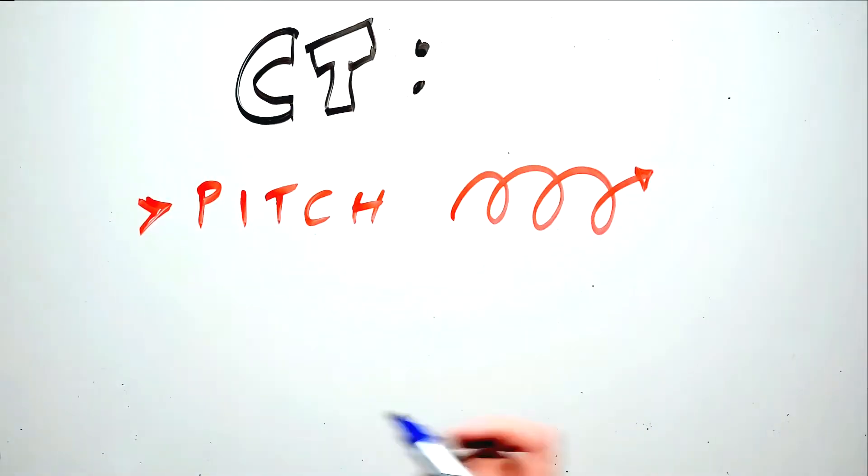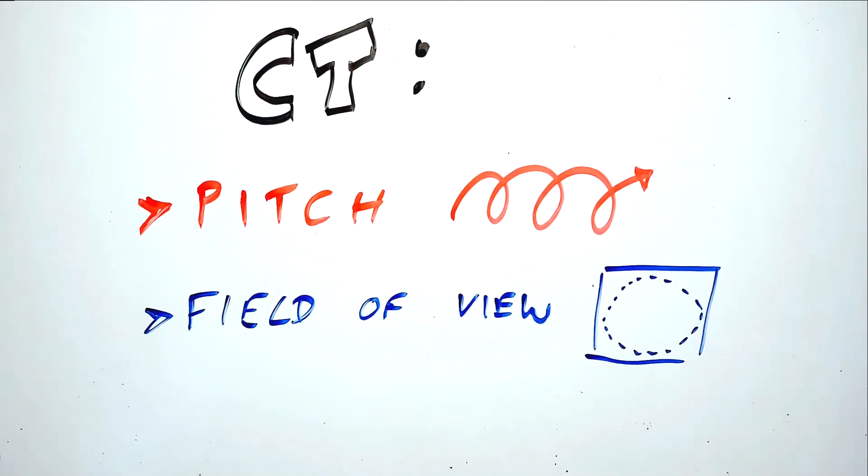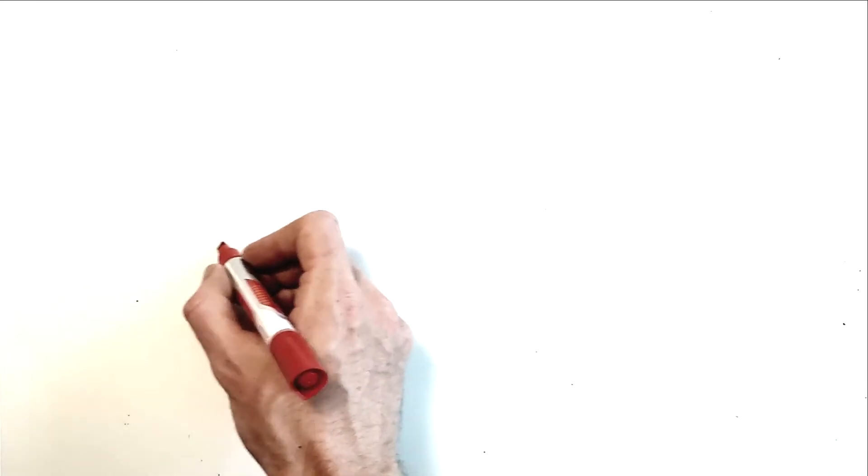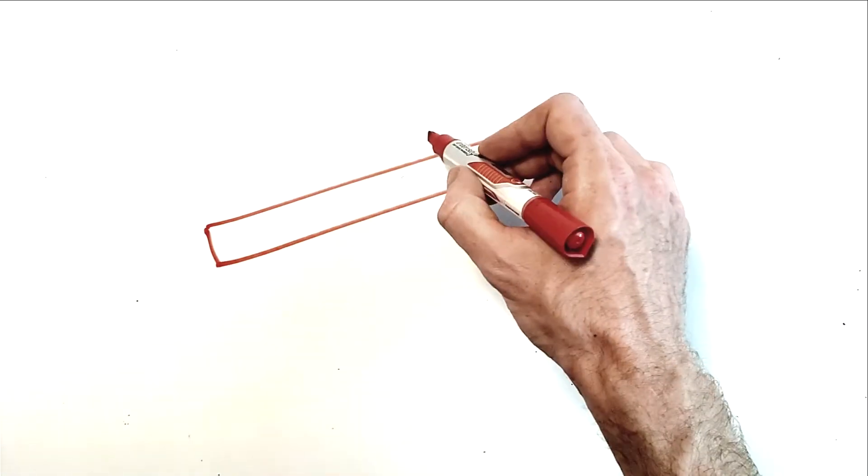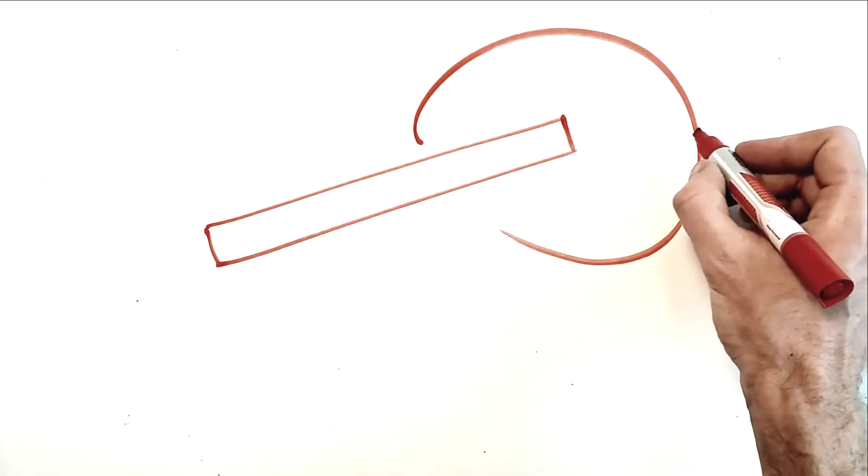In this video, we'll discuss helical pitch and field of view in CT. During helical scanning, the table moves continuously while the tube and detector array rotate around the patient.